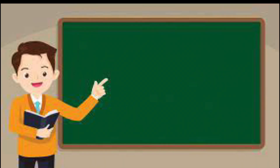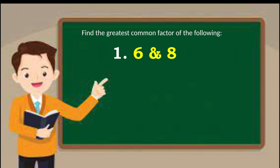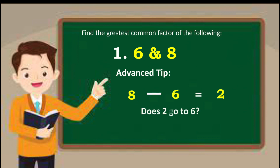Now let's try. Find the GCF of the following. Number 1: 6 and 8. Take the difference of the two numbers — 8 minus 6 is equal to 2. Does 2 go into 6? Yes. Therefore, the GCF is 2.